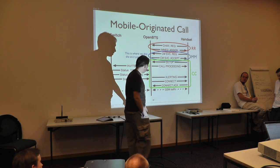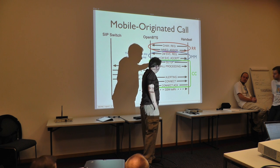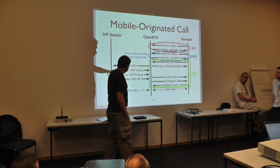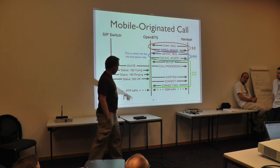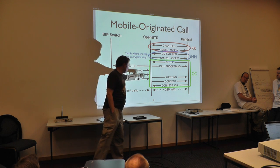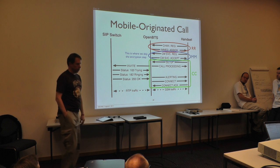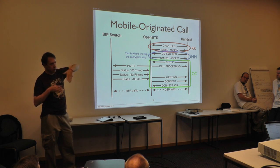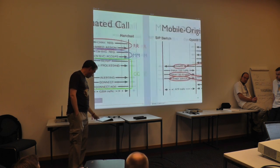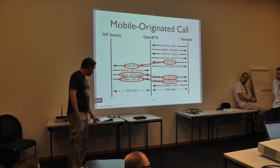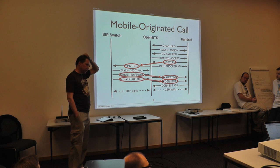What happens next is just a matter of matching up corresponding steps in the Q.931 call ladder and the SIP call ladder, so that the phone moves through the right series of states in both domains simultaneously and ends up in a bearer quality connection.